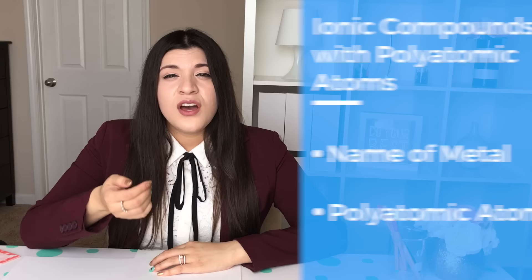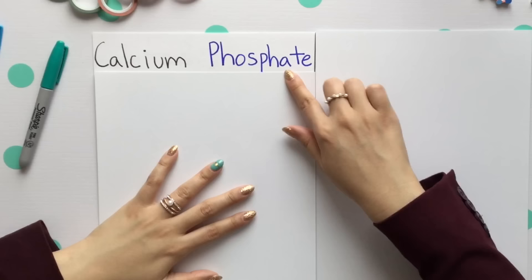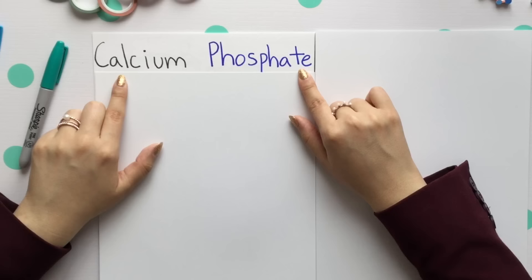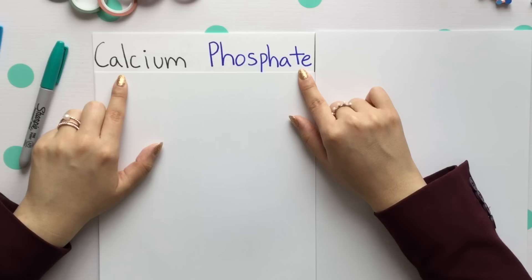Moving on to ionic compounds with a polyatomic atom, they consist of the name of our metal and our polyatomic atom. Notice you do not have your non-metal ending in ide. A lot of times polyatomic atoms end in ate or ite, with the exception of hydroxide and cyanide. We have calcium phosphate.